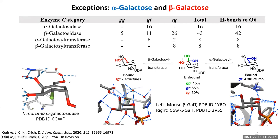By eclipsing this side chain with the pi bond, you generate a significant amount of allylic strain, which means that the fact that it still crystallizes this way indicates that the preference for the GT conformation is still quite high.